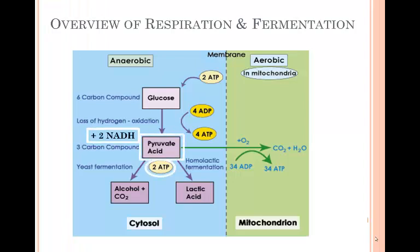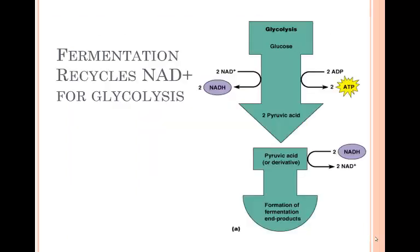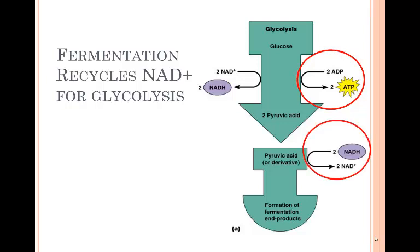If the cell is in anaerobic conditions, meaning without oxygen gas, they will switch to a fermentation pathway. Fermentation will not provide any additional ATP for the cell. The cell will simply gain 2 ATP per glucose from glycolysis. However, NAD+ levels will be depleted within the cell performing glycolysis unless the NADH molecules can be recycled. This is accomplished by fermentation.